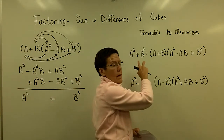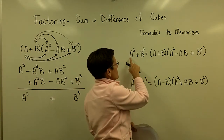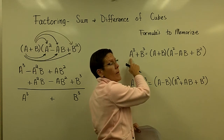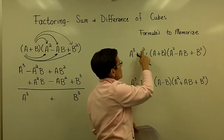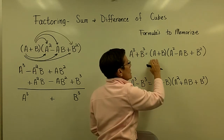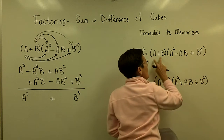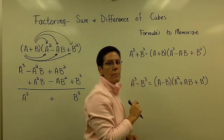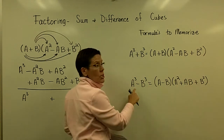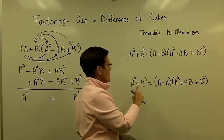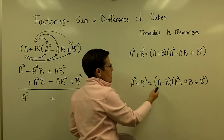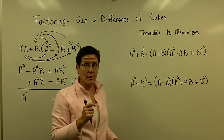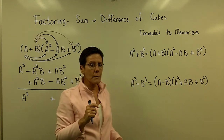So here it is again, just written out. It says that whenever you have an a value cubed plus a b value cubed, it will always factor into this binomial times this trinomial. Likewise, I could show you that if you multiply the difference version out, you get that statement as well.